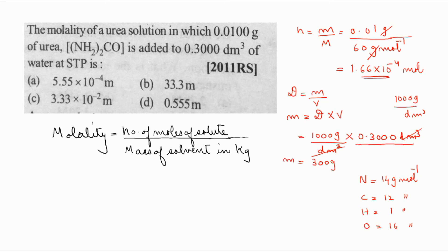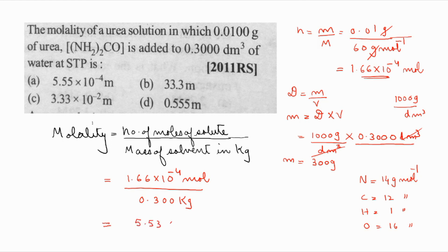Now substitute into the molality formula: number of moles of solute = 1.66 × 10⁻⁴ mol, divided by the mass of solvent in kilograms — 300 g divided by 1000 = 0.300 kg. Calculating this gives the answer as 5.53 × 10⁻⁴ molal. The answer is most closely option A, which is the correct option. Hope you also got the correct answer!